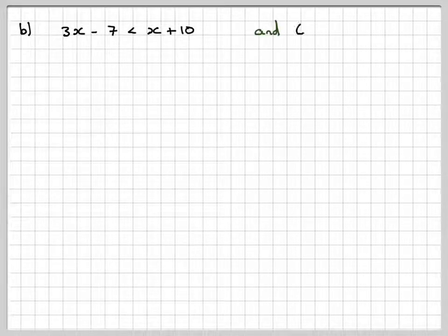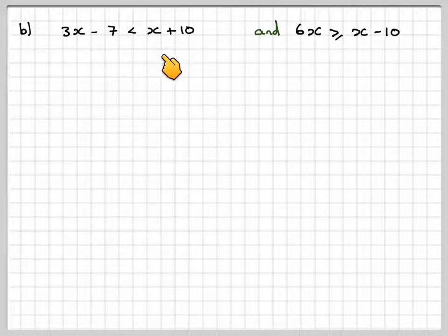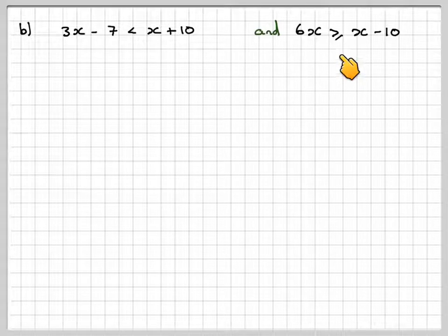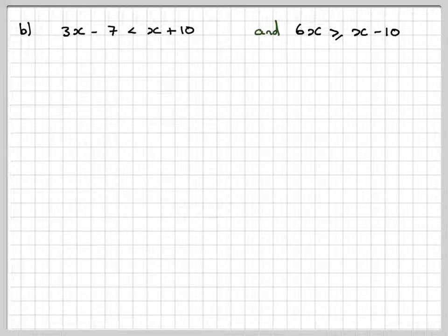Now for part B, we've got to find where 3x minus 7 is less than x plus 10 and 6x is greater than or equal to x minus 10. This is like solving simultaneous inequalities. What you do is solve them separately.